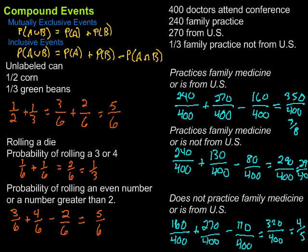To summarize compound events: it's an 'or' situation with two events. If they're mutually exclusive — no overlap — simply add the individual probabilities. If they're inclusive — things can fit into both groups — subtract out the duplicates. We worked through several examples of subtracting out those duplicates to get the correct probability. Hope that was helpful — keep working hard on your math and you'll do great!